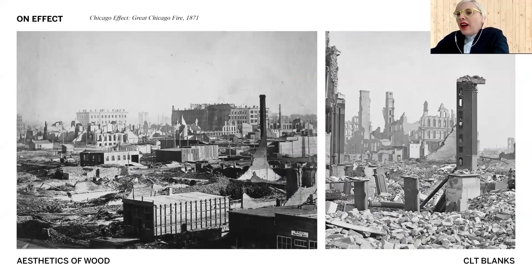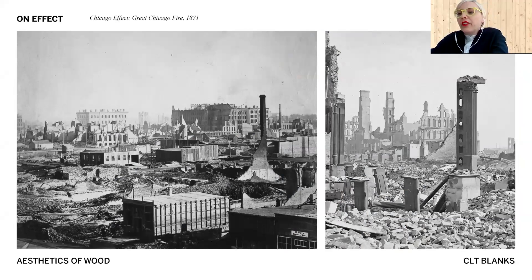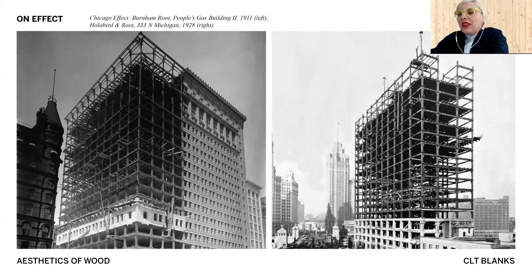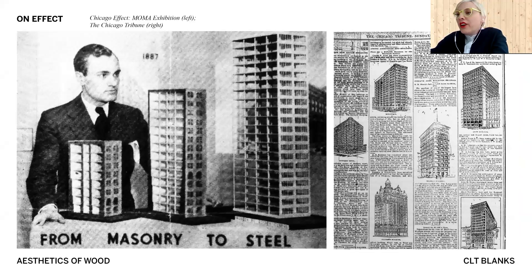In the late 19th century, after the Great Fire, the city of Chicago's rebuilding effort resulted in the first tall building constructed out of structural steel, one-third the weight of its masonry counterpart. Steel towers were fast to erect and exceeded fire code. A new type was born. The Chicago effect shifted paradigms.